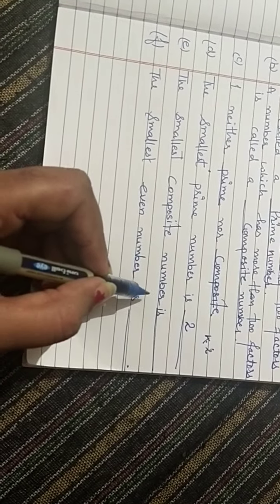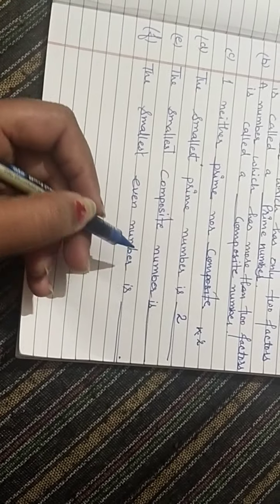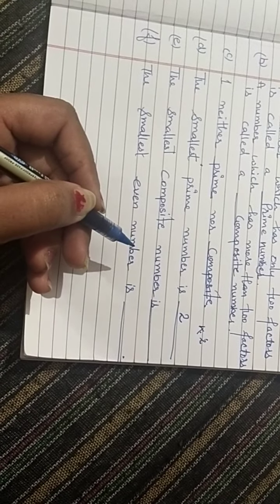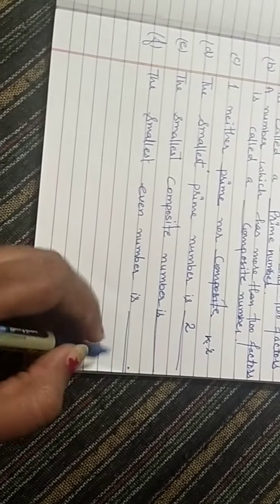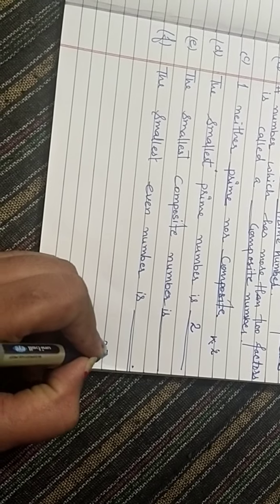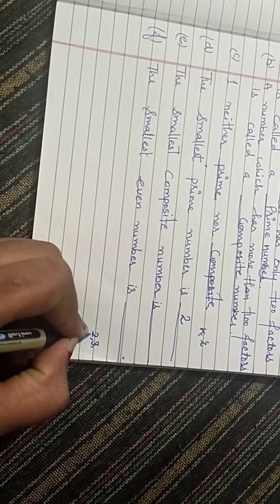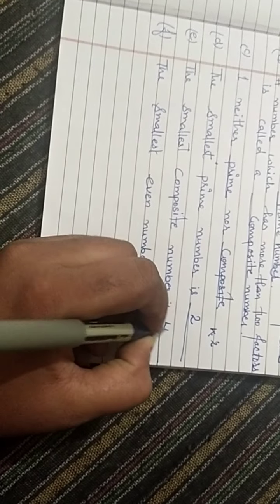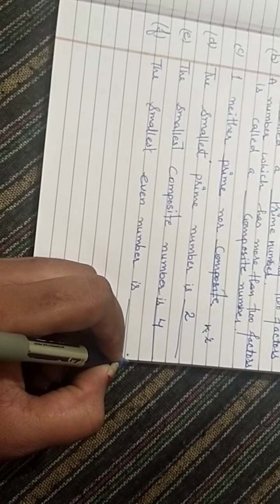Next, E part. The smallest composite number is - composite means a number which has more than 2 factors. 2, 3 - 2 is prime, 3 is prime, and 4 is composite number. So smallest composite number is 4.